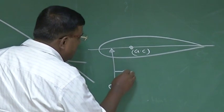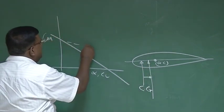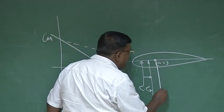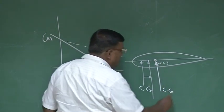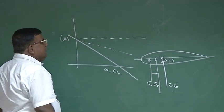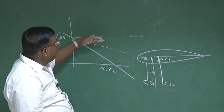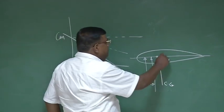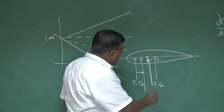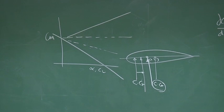Now, if I move this CG towards the right — let us say I have come down to a point here — what will happen? The slope will reduce, because now the restoring moment has reduced. When the CG just coincides with the AC, what happens? The slope becomes 0, or this line becomes parallel to the x-axis. This is the condition where we say the airplane is neutrally stable. The moment CG goes behind AC, it will become unstable — the slope will become positive. So this is the CG location at which DCM by DCL is 0; we call it the neutral point.